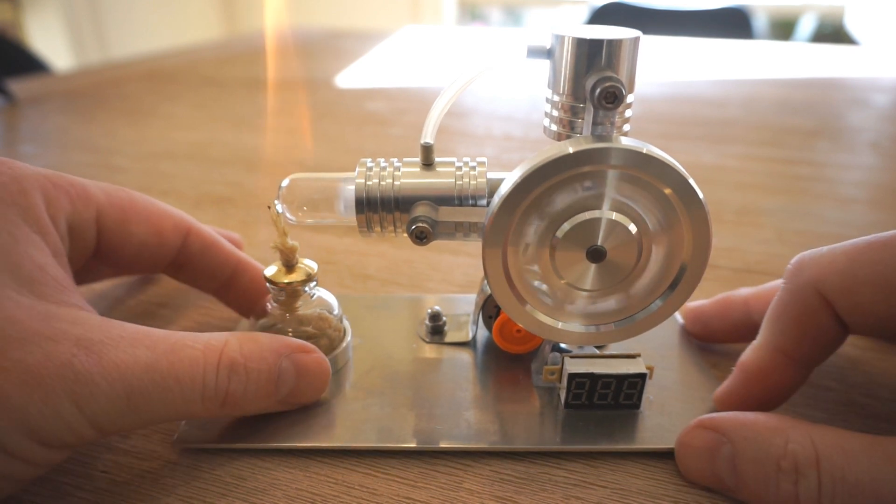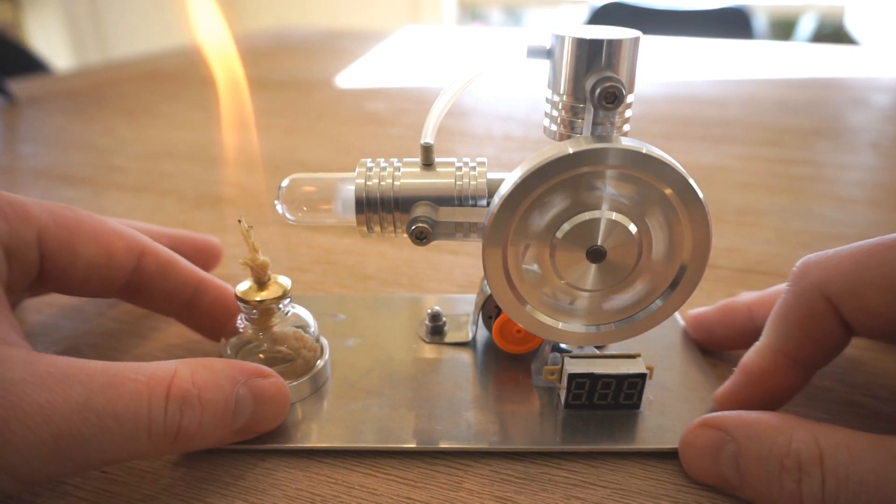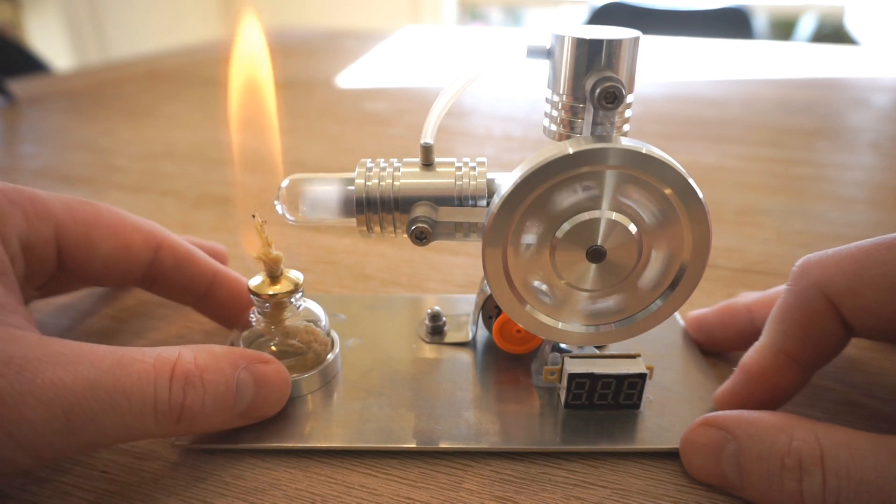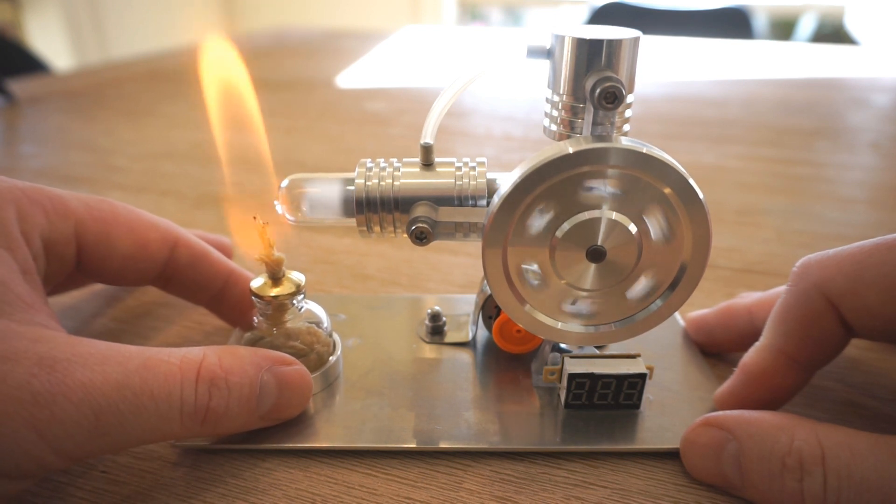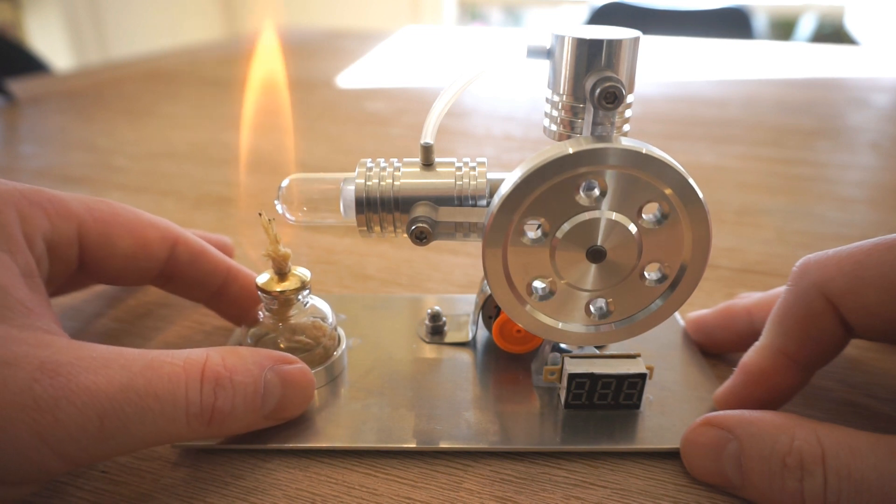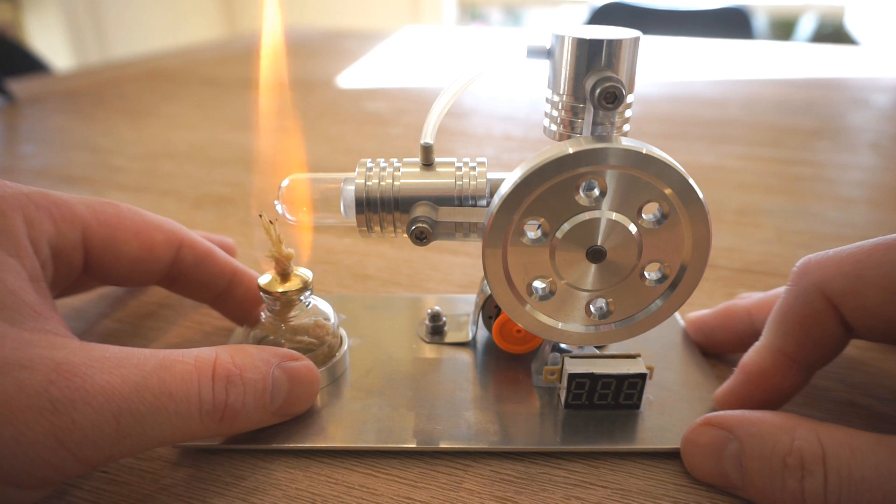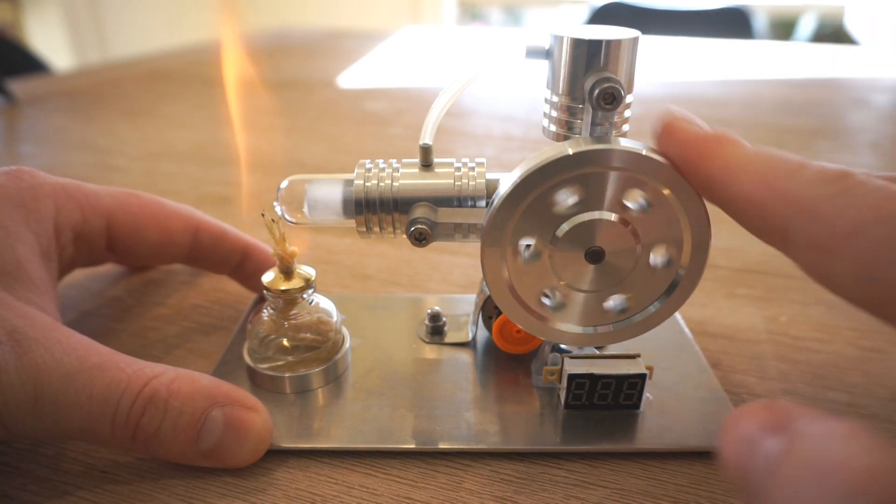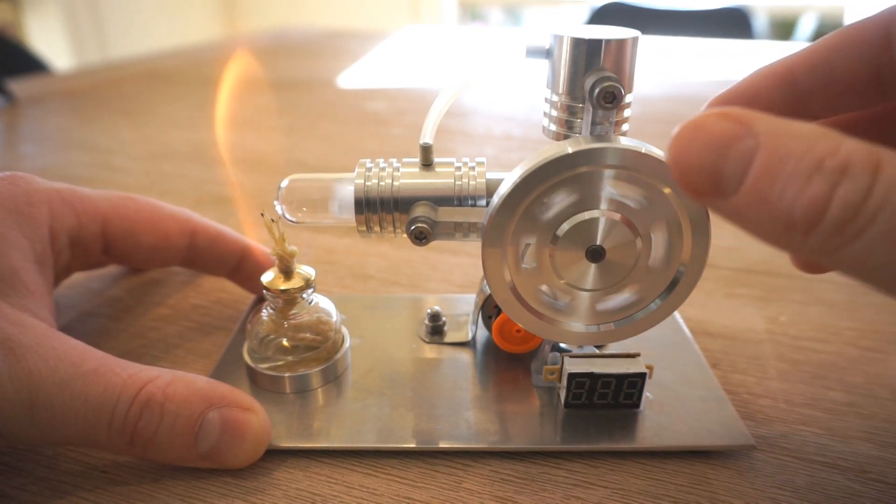I might just take the lamp away for a bit. And you can see it slows down. So let's put it back under. Oh, it stopped completely. I just want to get that position just right so that it's not going to spin so fast that it breaks itself. I think about there should be okay. Let's try again. Let's get it going again. There we go.